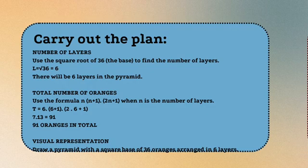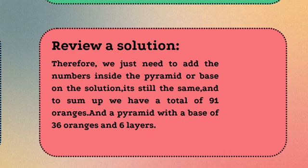We will then review the solution. By following the formulas, we have arrived at a total of 6 layers and 91 oranges in total. So if we count the pyramid by doing 6×6, 5×5, 4×4, 3×3, and so on, we arrive at the same conclusion. In turn, the answers and solutions are correct.